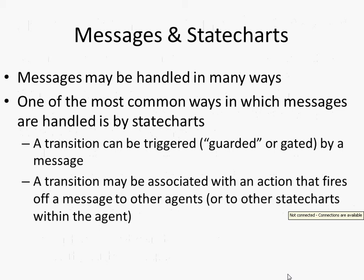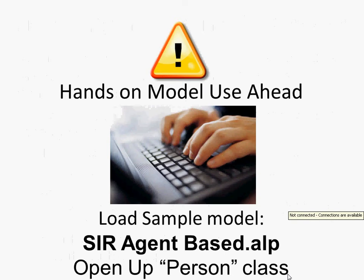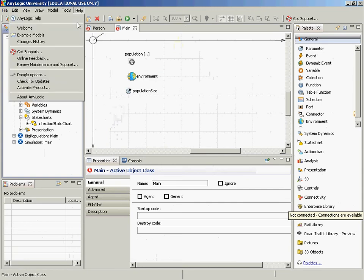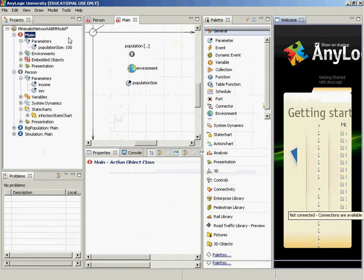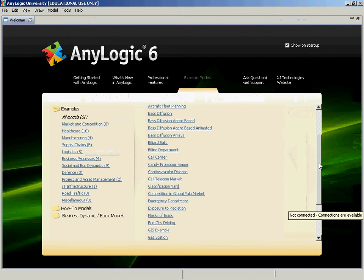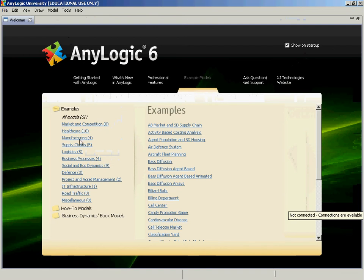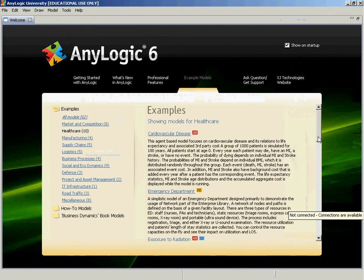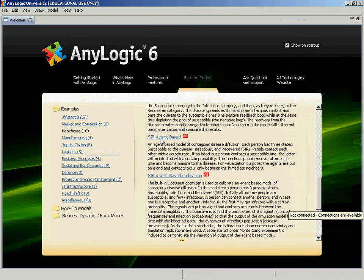The most common way of dealing with messages is within state charts. Transitions can be triggered by messages, and such a transition might be associated with an action that occurs within the agent who received it. Let's take a look at one of the built-in models. To open it, go to the Help menu and go to Example Models. We're going to go down to the SIR agent-based model. Depending on the situation, you may need to switch to the healthcare component, or it may be listed directly.